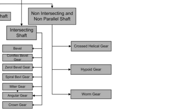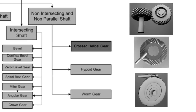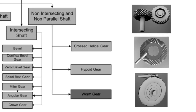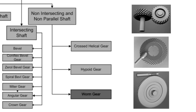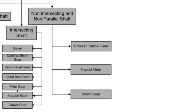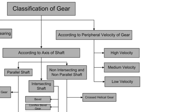Non-intersecting and non-parallel shaft gears are classified into three groups: crossed helical gears, hypoid gear, and worm gear. According to peripheral velocity of the gears, gears are classified into three groups: low velocity gears, medium velocity gears, and high velocity gears.